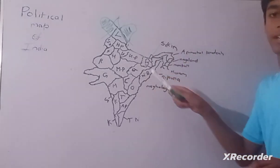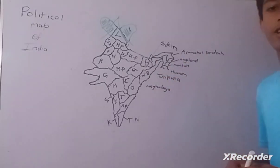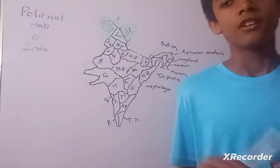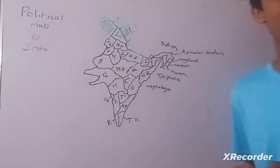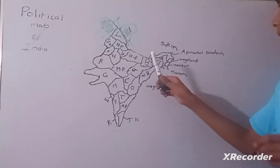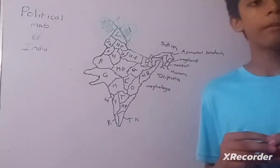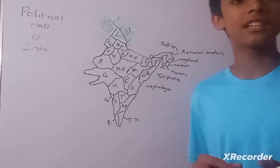Now we'll talk about UP or we can say Uttar Pradesh. Uttar Pradesh is the most populated state in India and its capital is Lucknow. Now we'll talk about Bihar. Bihar is land of monasteries and its capital is Patna.